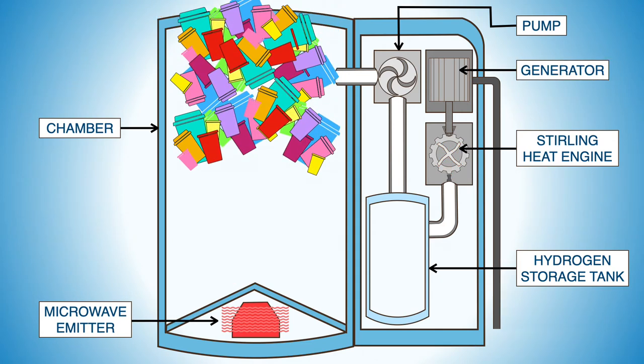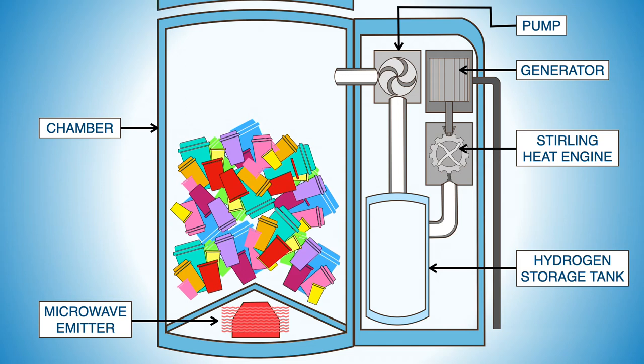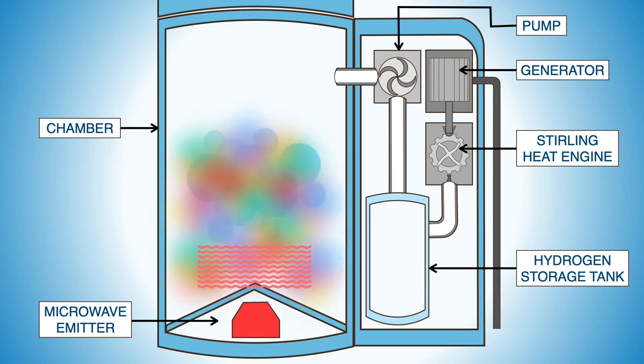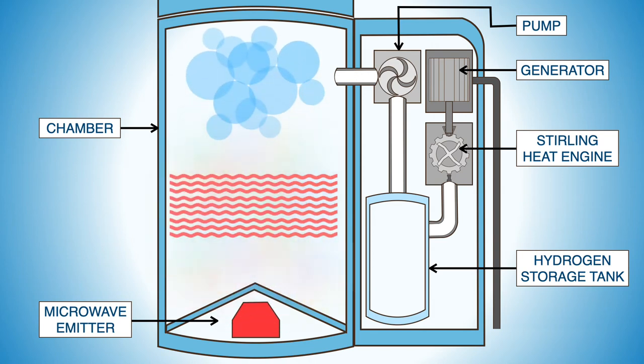Plastic waste is placed in the chamber. The chamber is sealed, and most of the air is evacuated. The microwave generator heats the waste until it is broken down into hydrogen molecules. The hydrogen gas is pumped into the holding tank. The sterling heat engine consumes the hydrogen and drives the generator that produces electric power.